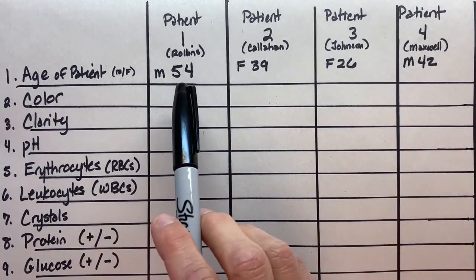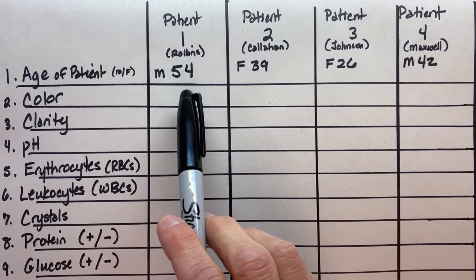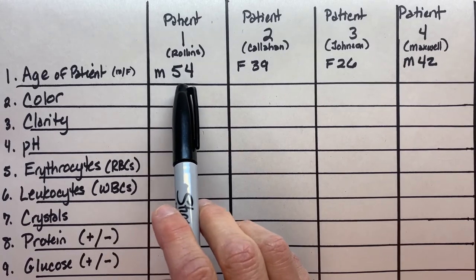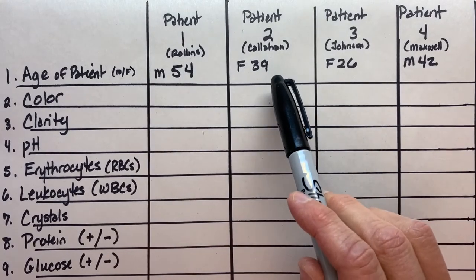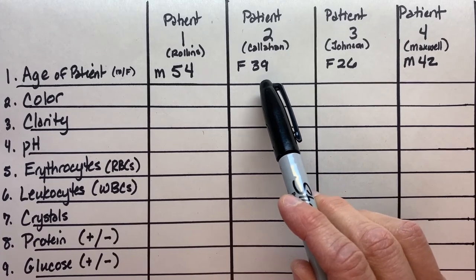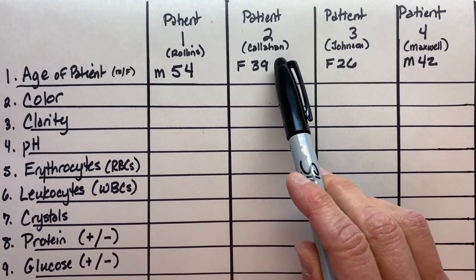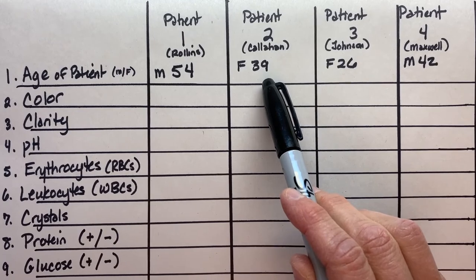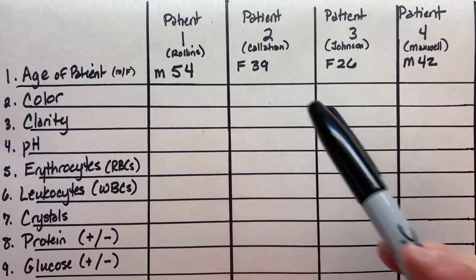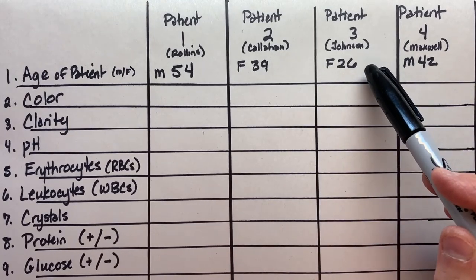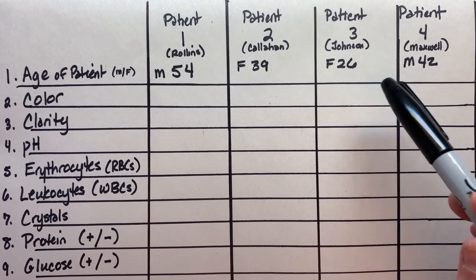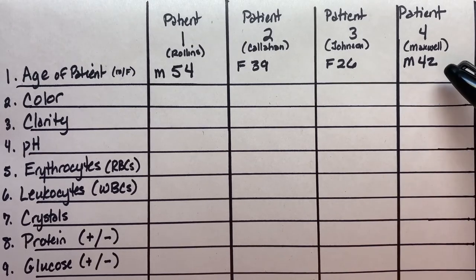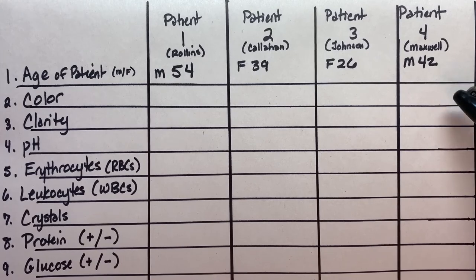Note the age and sex of each of these patients. We have a male patient named Mr. Rollins — he is 54 years old, that's patient number one. Patient number two is a female named Mrs. Callahan, she is 39 years old. Patient number three is Ms. Johnson, she is 26 years old. And patient number four is Mr. Maxwell, he is 42 years of age.